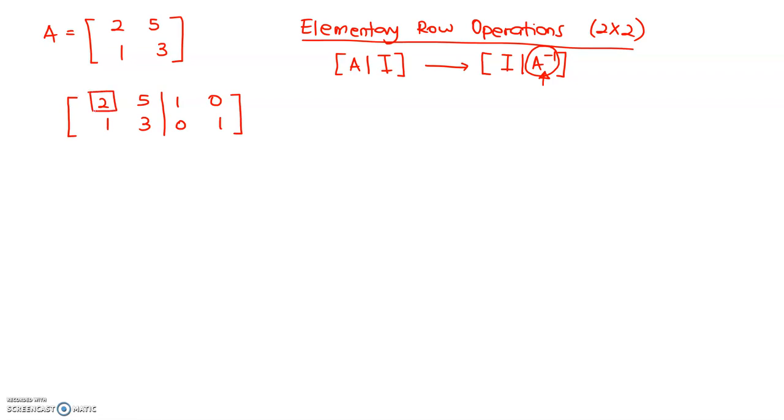This is our diagonal and here we have to make sure the number below it becomes 0 because we want to have the identity 1, 0, 0, 1. So, I am more focusing on getting this 0 first and then I am going to change it to 1. I want to change row 2, so the operation is with row 1.